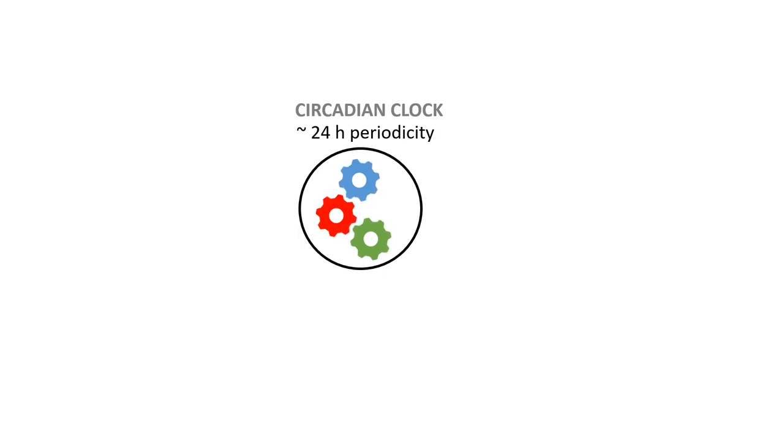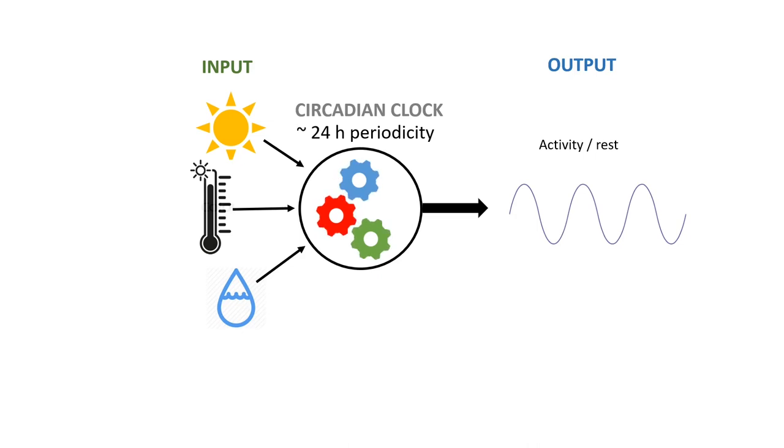Circadian clocks are internal timekeepers that run with a near 24-hour periodicity. Time information to these clocks is given by various cyclical cues in the environment such as light and temperature. These clocks help animals synchronize their activity according to time of day. In some cases, food can also help the clock keep time.